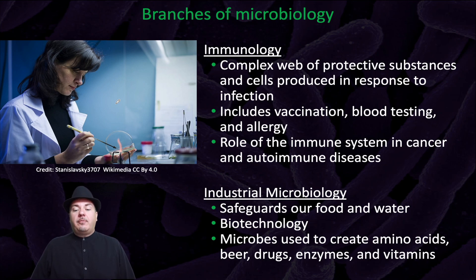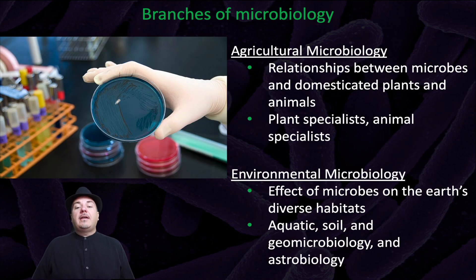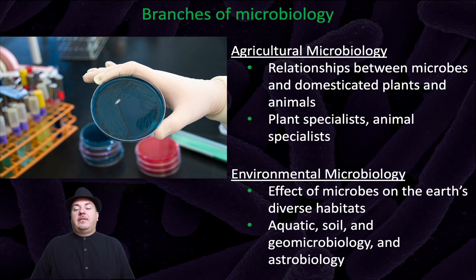Then we have industrial microbiology, which safeguards our food and water — we use biotechnology and microbes to create amino acids, beer, drugs, enzymes, and vitamins. Agricultural microbiology studies the relationship between microbes and domesticated plants and animals. And environmental microbiology examines the effect of microbes on the earth's diverse habitats.